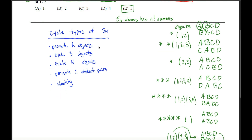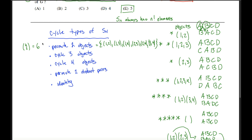How many ways can we permute two objects? We choose two of the four objects and flip them: 4 choose 2 equals 6. Those six elements are (1 2), (1 3), (1 4), (2 3), (2 4), and (3 4) — all permutations of two objects.